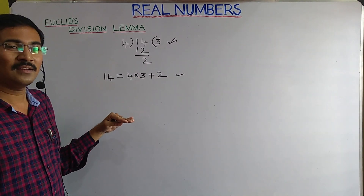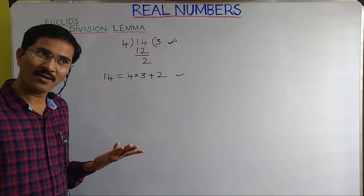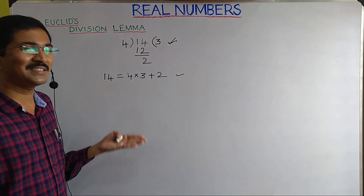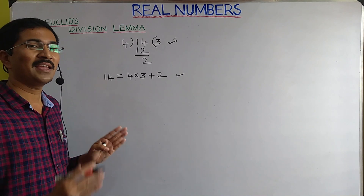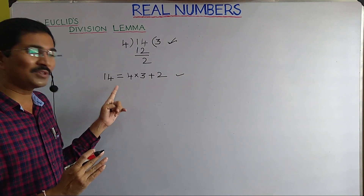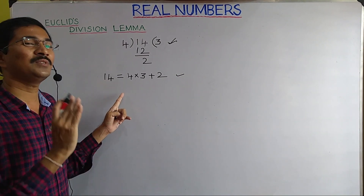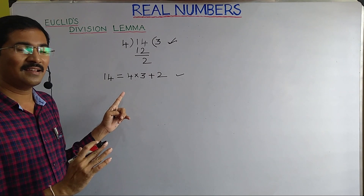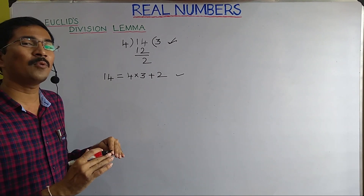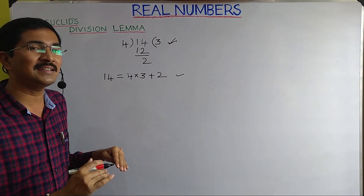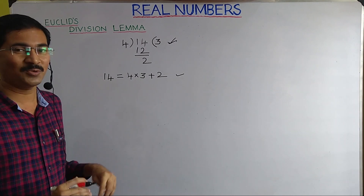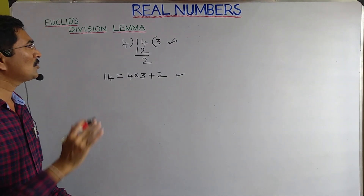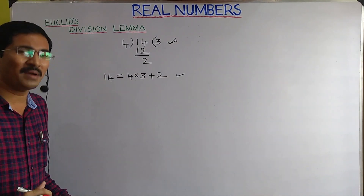Let us check: 4 times 3 is 12, and 12 plus 2 is 14. Therefore this division is right and the equation is satisfied. This is Euclid's Division Lemma — in your childhood you did it as a practice without knowing the name, and now you are learning it in detail.